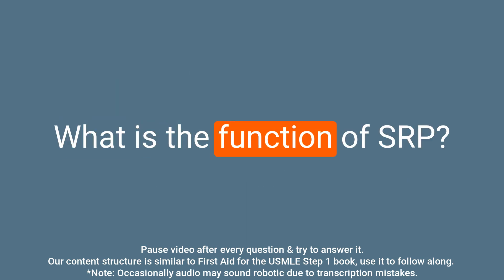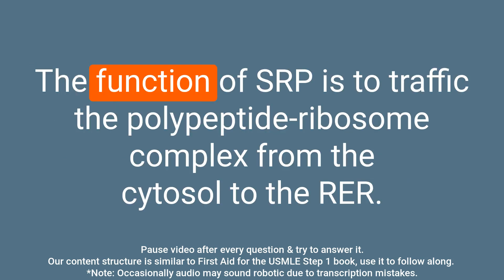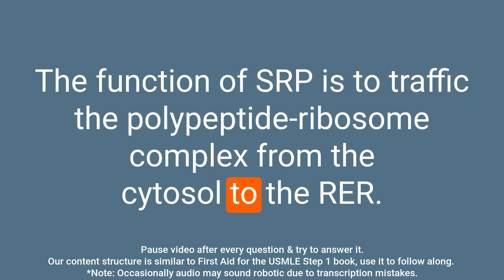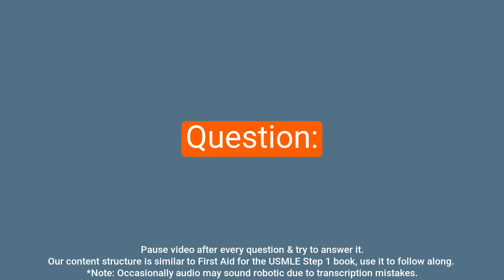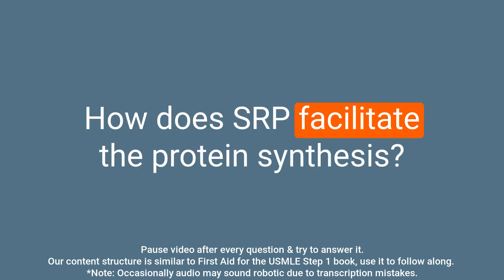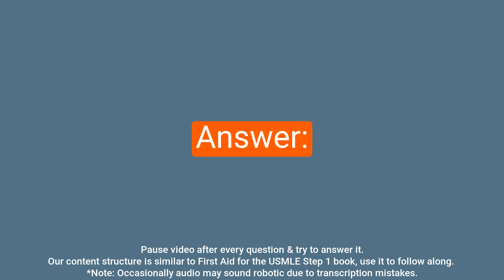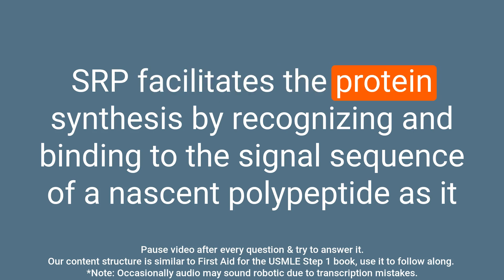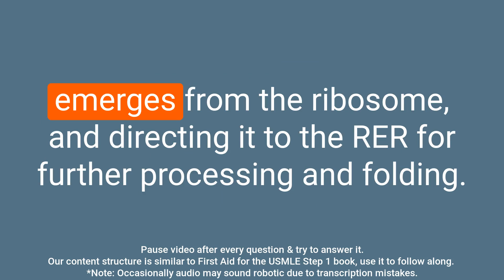Question: What is the function of SRP? Answer: The function of SRP is to traffic the polypeptide ribosome complex from the cytosol to the RER. Question: How does SRP facilitate protein synthesis? Answer: SRP facilitates protein synthesis by recognizing and binding to the signal sequence of a nascent polypeptide as it emerges from the ribosome, and directing it to the RER for further processing and folding.